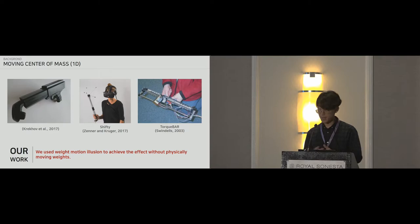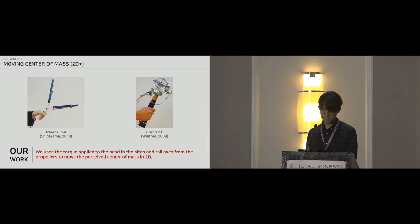In terms of moving weights and shifting centers of mass, past works utilized physically moving weights that shifted along a set axis. Krakow and his colleagues created a telescopic gun interface to simulate different guns in VR. Shifty, as you've seen before, used a moving weight to simulate changes in objects' length, girth, and size. And torque bar moved the weight laterally to simulate ball movement sideways and giving directional cues. In our work for moving weights and shifting the center of mass, we did not use a physical weight, but rather used weight motion illusion to achieve the same effect.